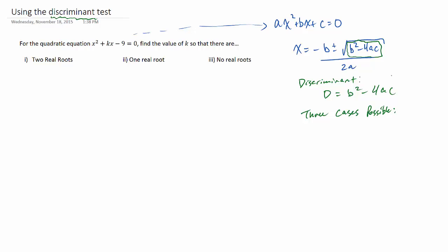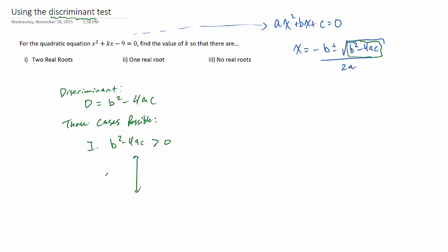And we'll know that there are three cases that are possible for the discriminant. So the first case is that we have a positive discriminant, it's greater than zero. Second case is that we have exactly zero for our discriminant. And the third case is that we have a negative discriminant.